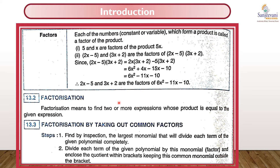So factorization is a process of finding two or more expressions whose product is equal to the given expression. Now let us see how we can find the factors. In order to find the factorization, first we have to find the largest monomial that will divide each term of the given polynomial completely.